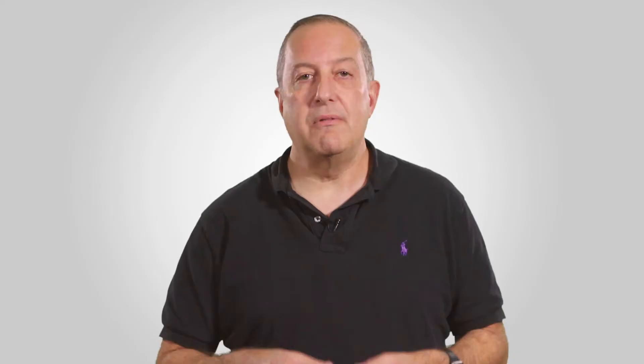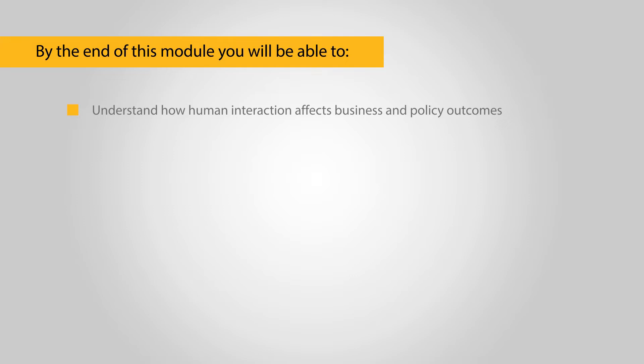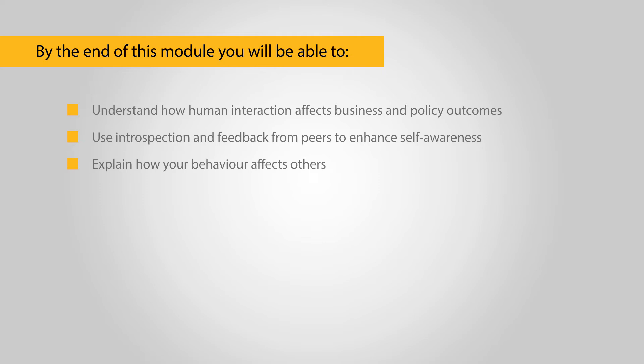This module is centered around self-reflection and evaluation exercises. By the end of this module, you should be able to understand how human interaction affects business and policy outcomes, including change initiatives. Also, use introspection and feedback from your peers to enhance your self-awareness. Explain how your behavior, which includes verbal and nonverbal communication, affects other people.